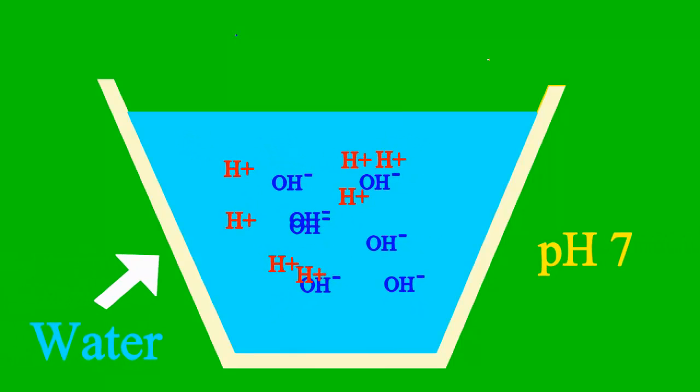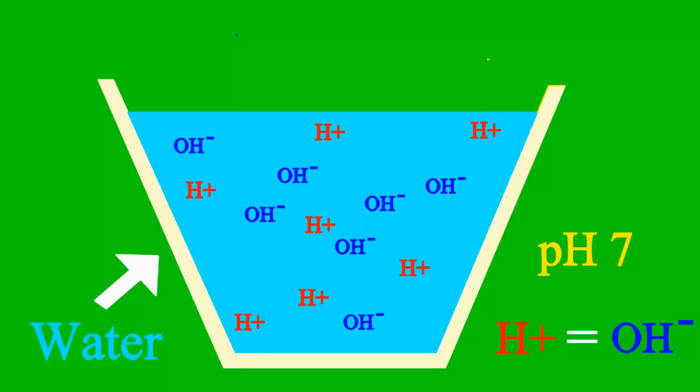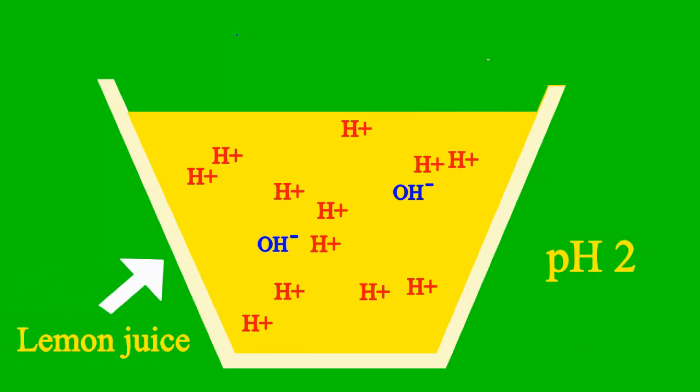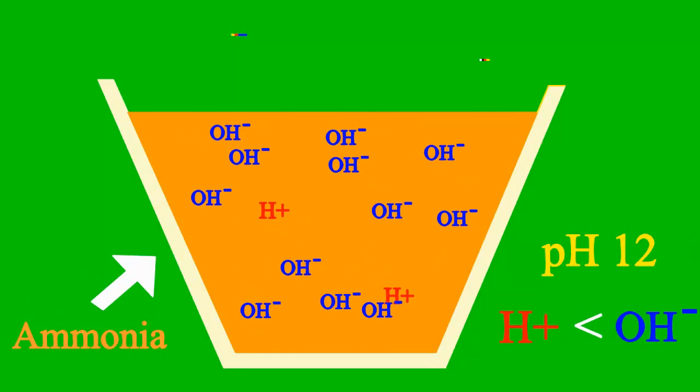When the pH is 7, it's a case where the sample is neither an acid nor base. Less than 7, it's an acid. More than 7, it's a base all the way.